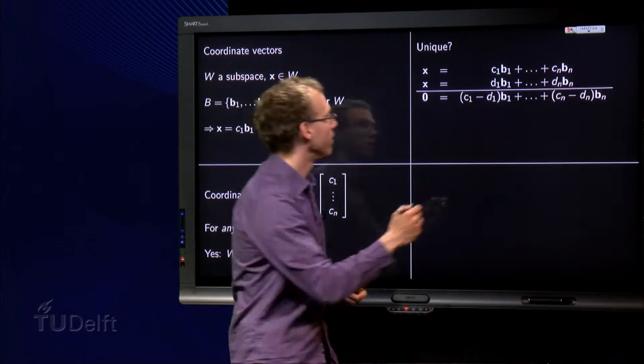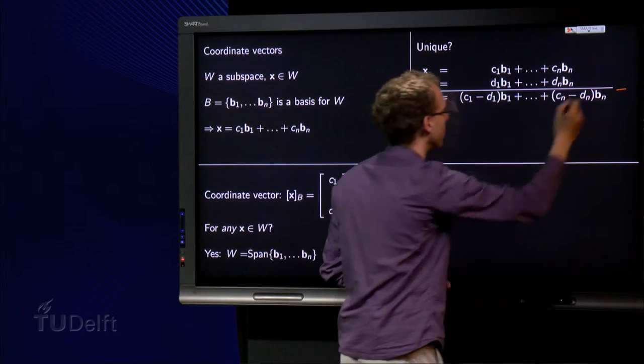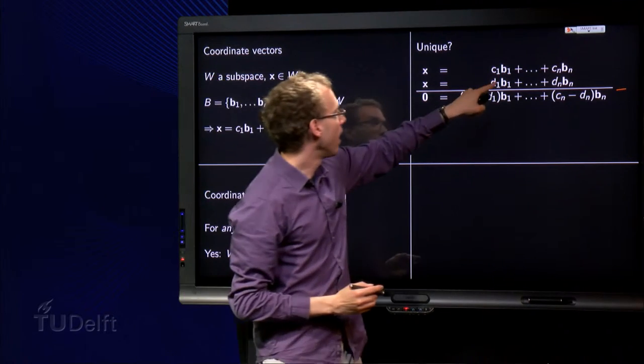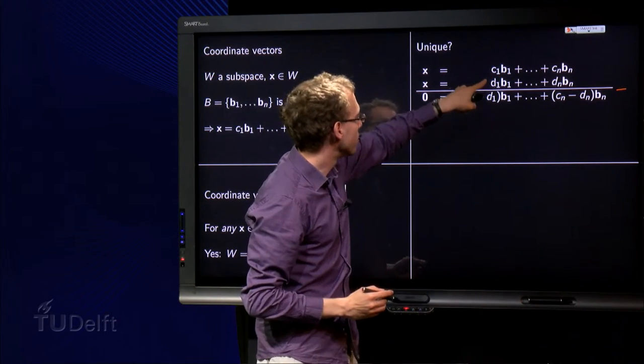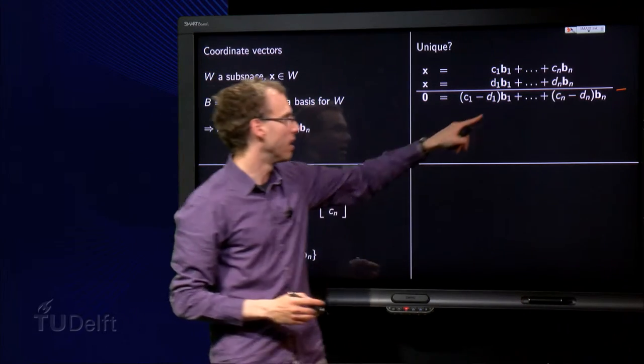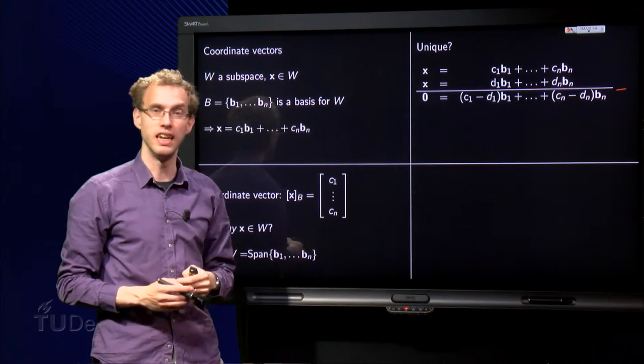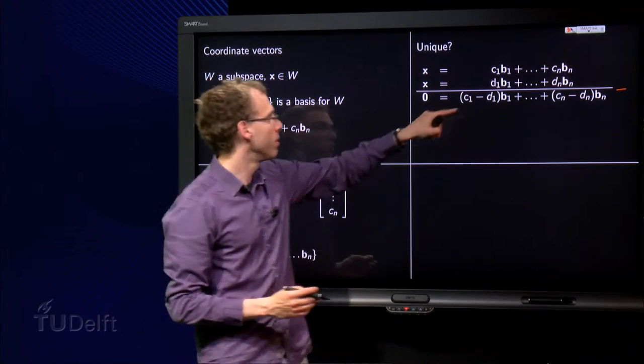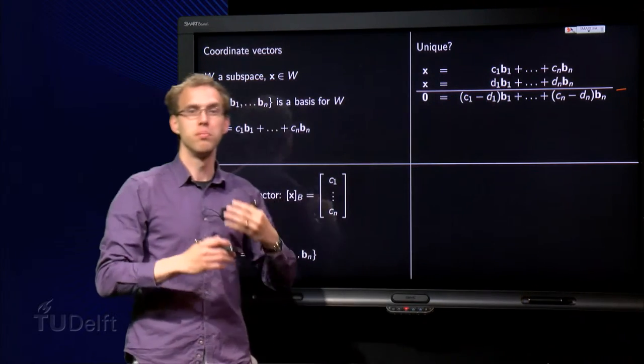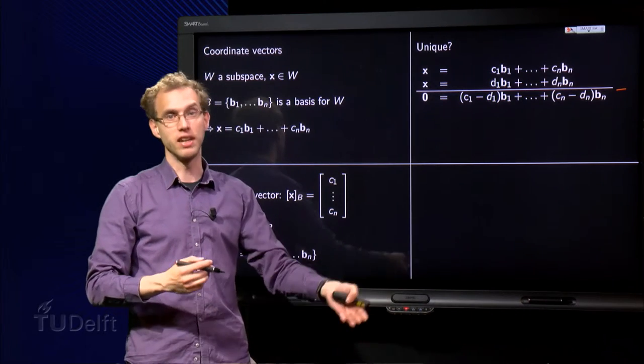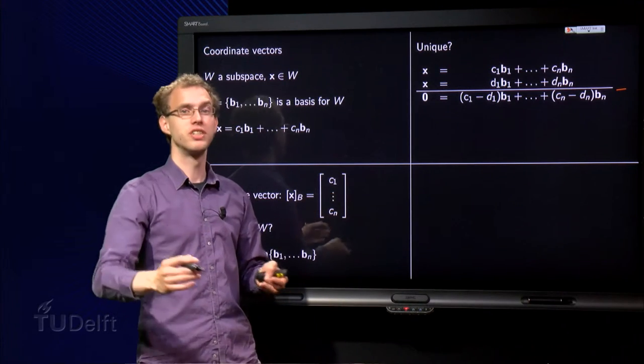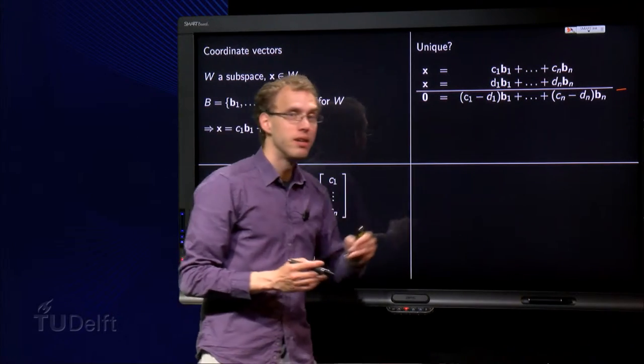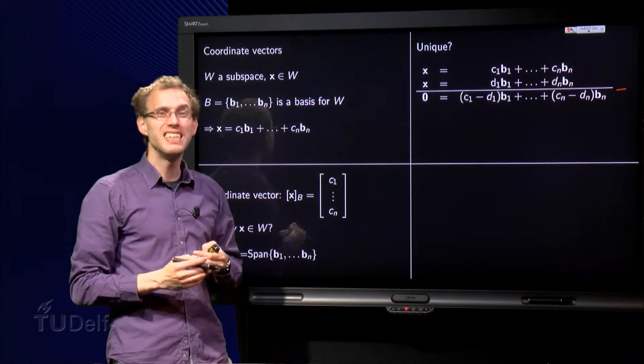What do we do? We subtract the two: x minus x equals 0, and we have b₁ times (c₁ minus d₁), etc., up to (cₙ minus dₙ) times bₙ. But now we have an equation of the form scalar times b₁ plus scalar times b₂ plus scalar times b₃, etc., up to scalar times bₙ equals 0. But the set b₁ up to bₙ is a basis, so it is independent.